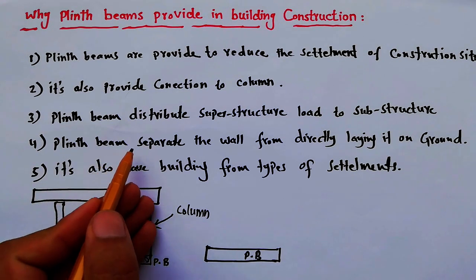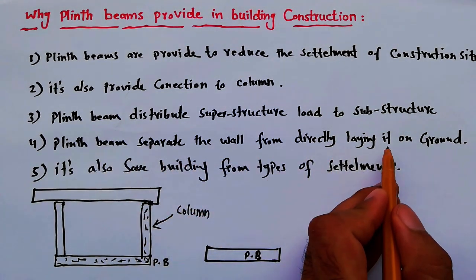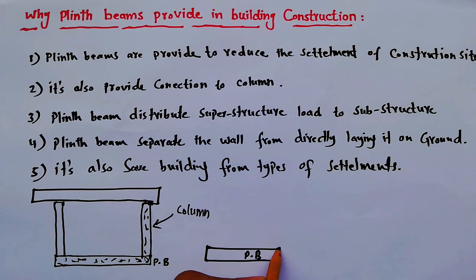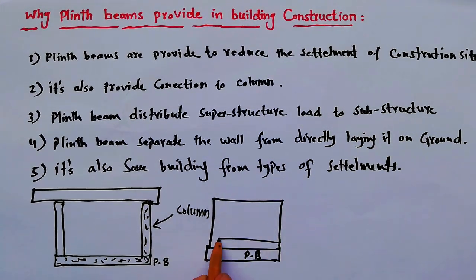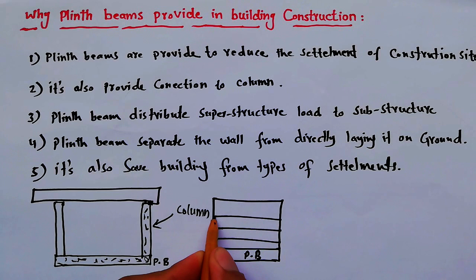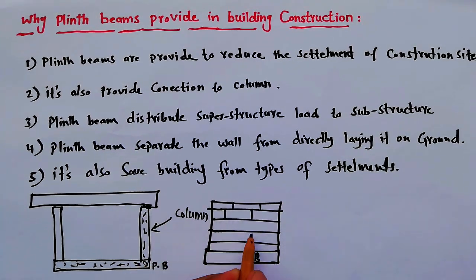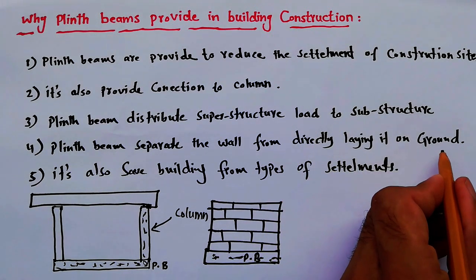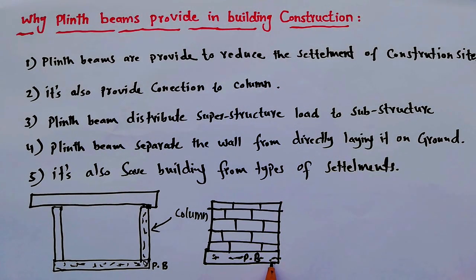Fourth point: the plinth beam separates the wall from directly laying on the ground. If we don't provide the plinth beam in building construction, the masonry wall will sit directly on the ground. So we provide the plinth beam to keep the wall elevated and to give more benefits to the building.